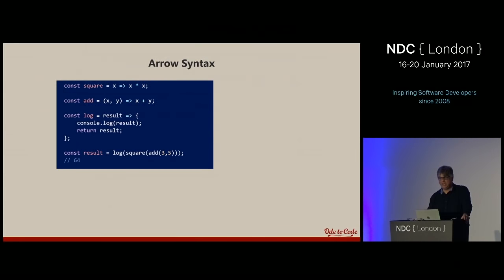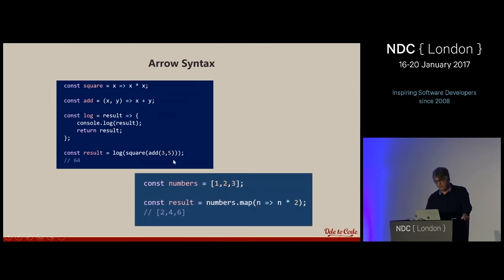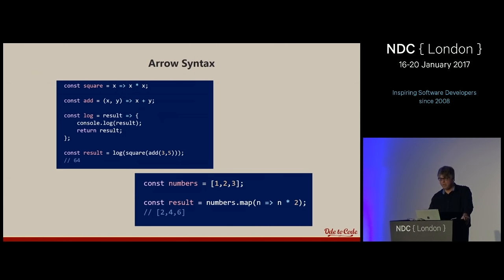Arrow syntax introduced in ECMAScript 2015 is a beautiful notation for writing functions, similar to lambda expressions in C#. You can write an expression where x goes to x times x, and invoke it like a function. With two parameters you need parentheses: x and y going to x plus y. It enables a lot of higher-order function programming — you can call map on an array, pass in an arrow function, and double everything in the array without using the function keyword.